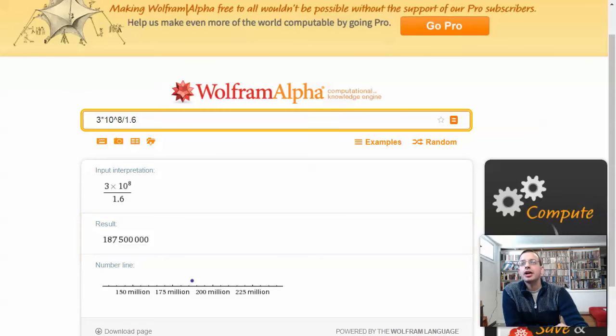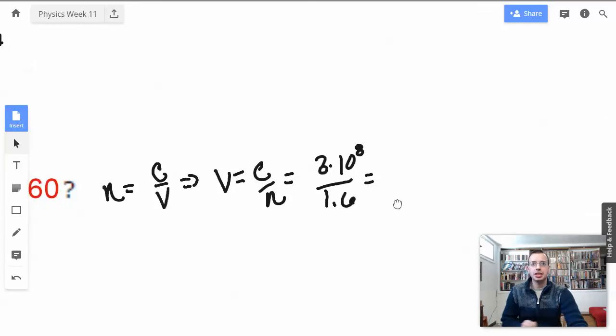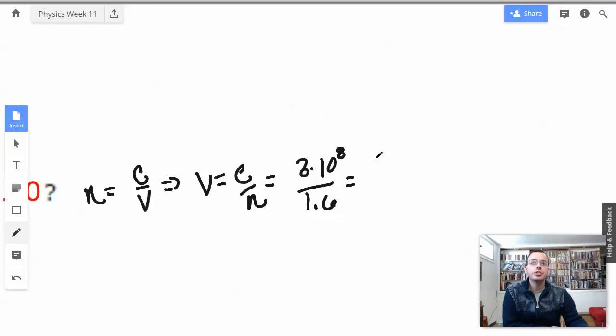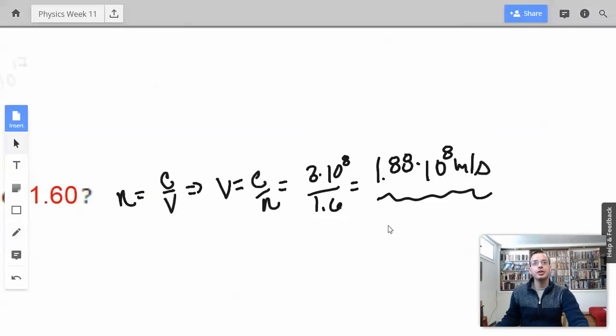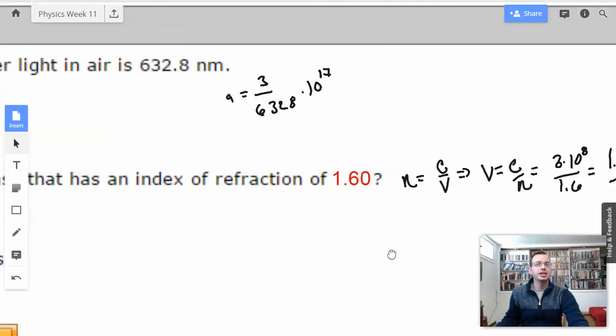I'm going to say 1.88 times 10 to the 8th. So what this index of refraction is saying is that in the second material, light only travels at 1.88 times 10 to the 8th meters per second.